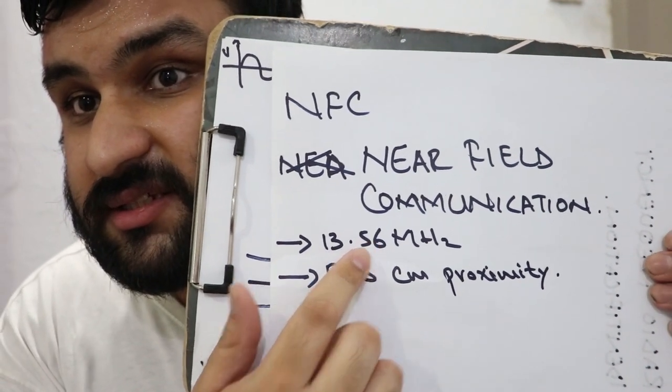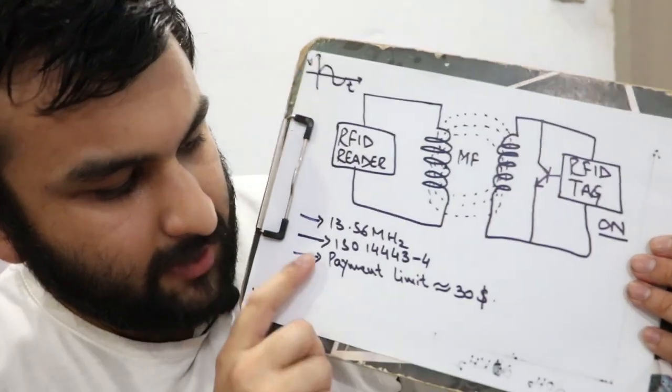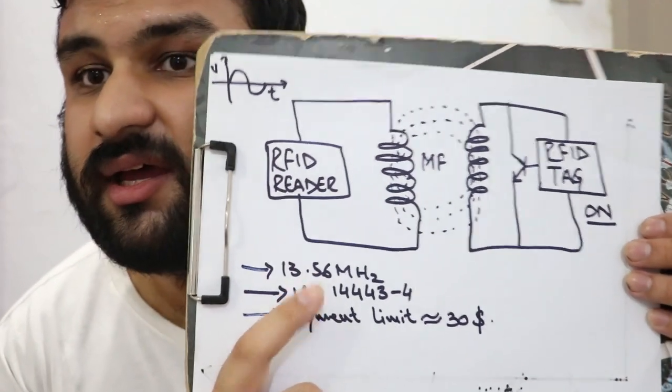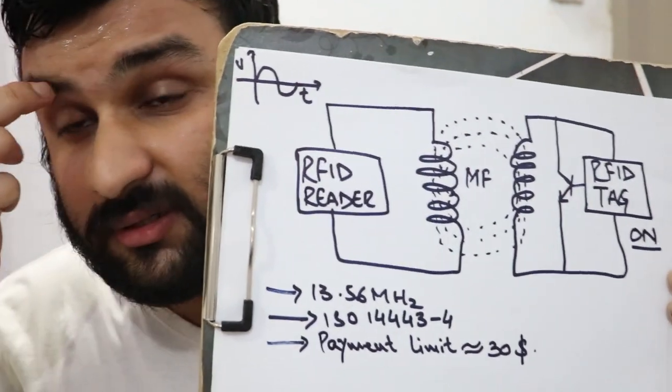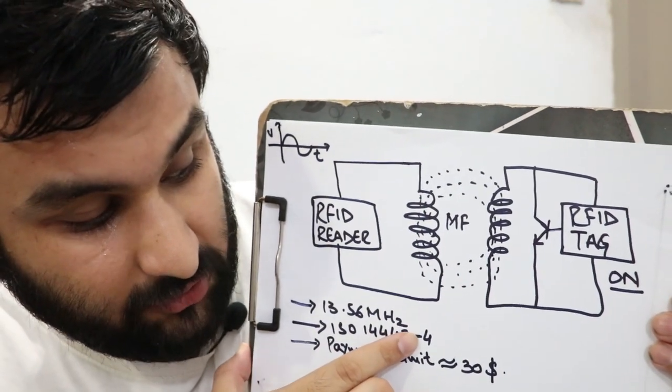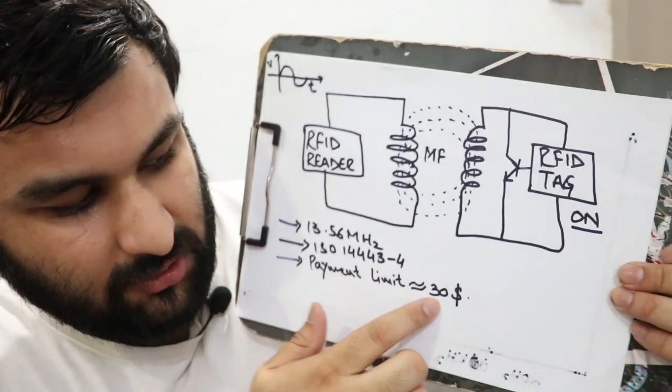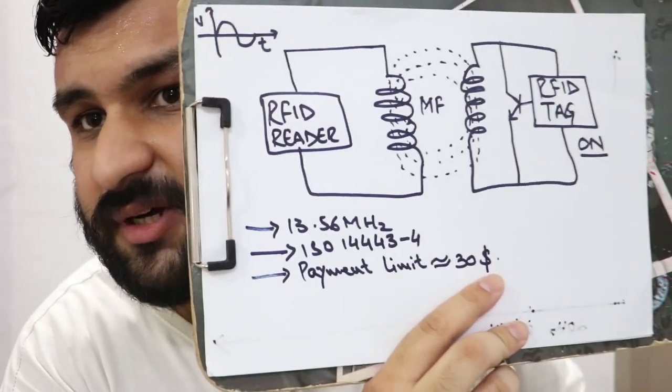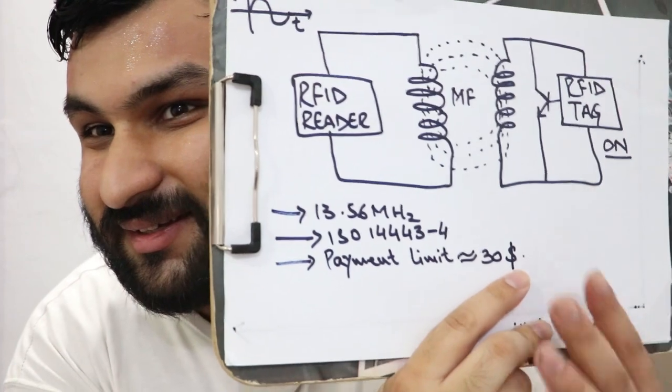It uses a 13.56 megahertz frequency range and it basically uses the ISO 14443-4 standard. The payment limit is also limited to mostly like 30 dollars. It's not that much, but in case someone gets you through that, they won't get too much out of you.